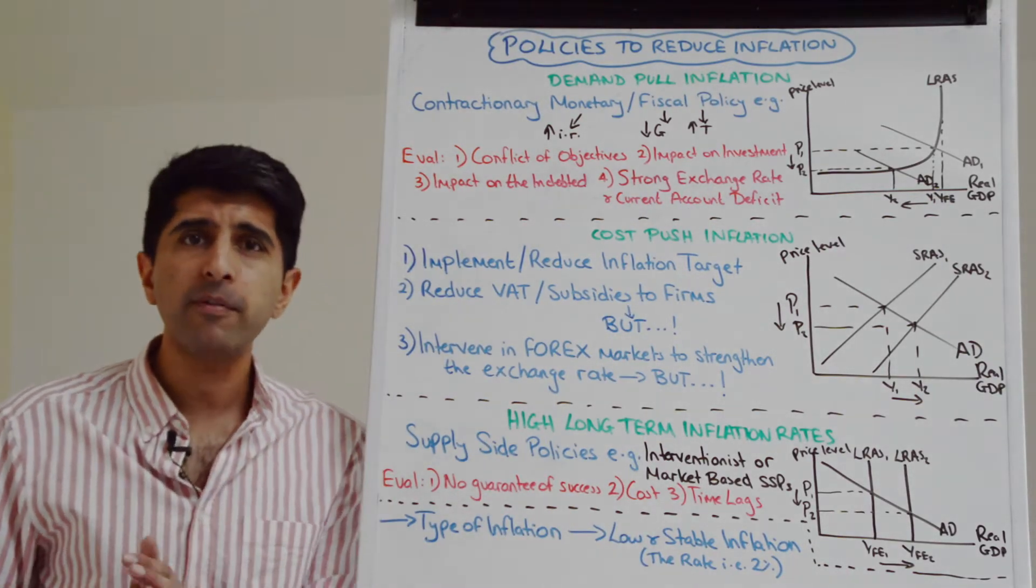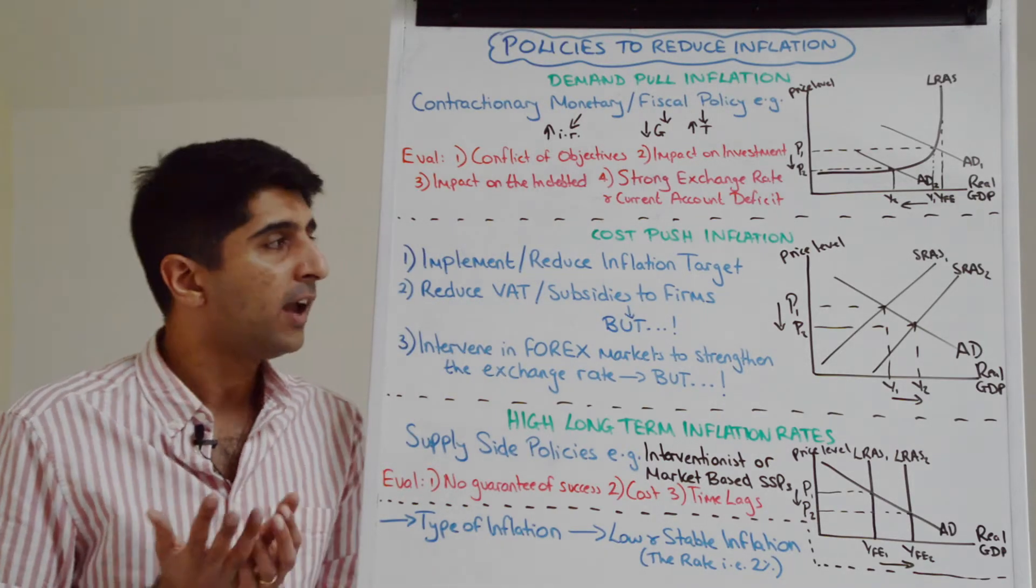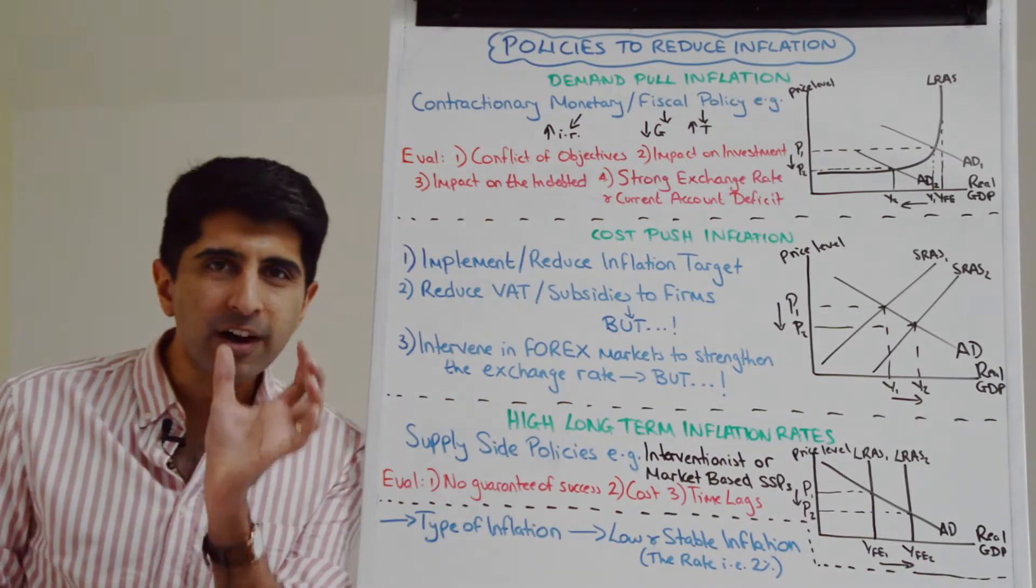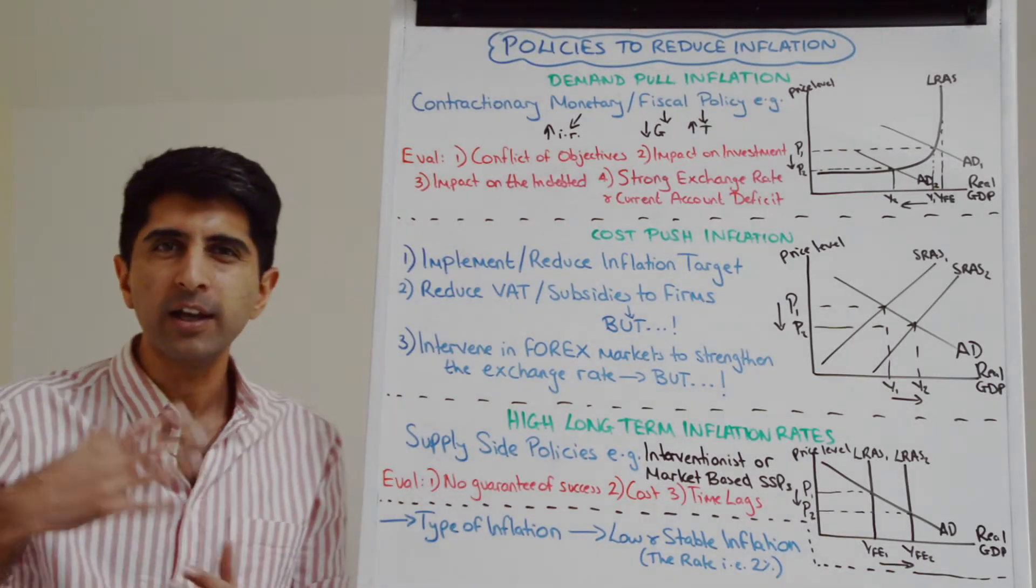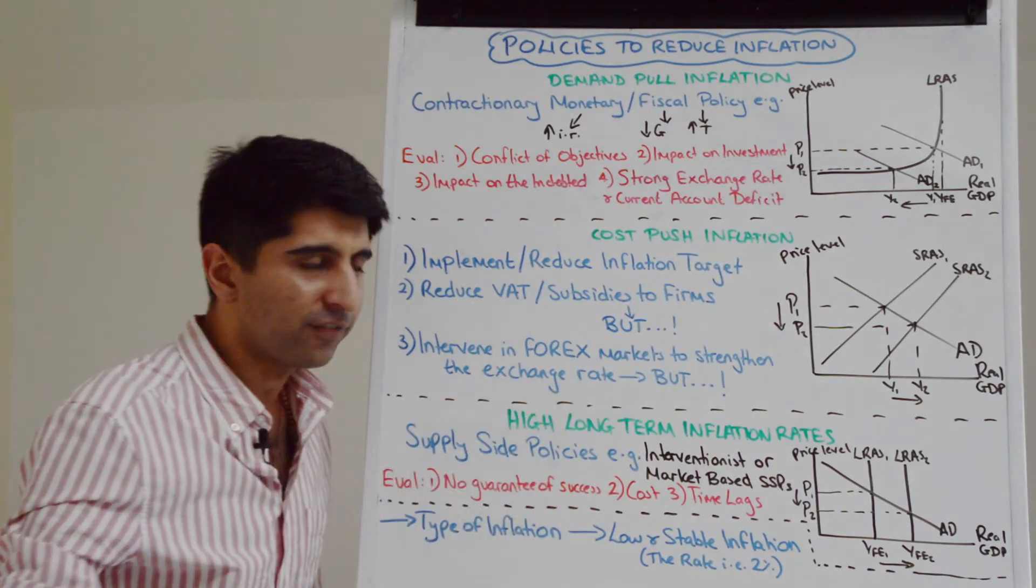But now let's say that the type of inflation prevalent is not demand pull. Maybe it's cost push inflation that's pushing the inflation rate beyond target. What could be done then? Well, we need policies here that are very much targeting the cause. Remember all the reasons why SRAS could shift to the left - higher cost of production that could lead to this inflation.